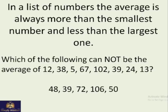So if we look at the available choices, we are not calculating the average at the moment, but we just try to find out which of them cannot be the average technically. So out of all these numbers, 48, 39, 72, 106, and 50, this 106 is more than the largest number in the list given. It means this one cannot be the average.